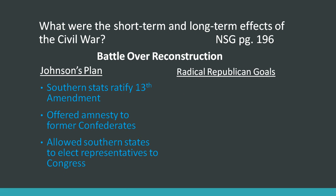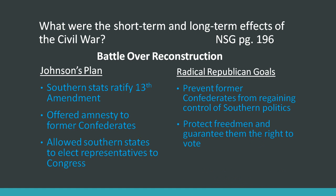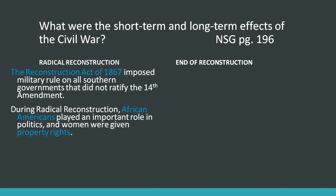Under Radical Reconstruction, the Republican goals were to prevent former Confederates from gaining control of Southern politics and to protect freedpeople and guarantee them the right to vote. The Reconstruction Act of 1867 imposed military rule on all Southern governments that did not ratify the 14th Amendment. Once they ratified it, military rule was lifted.